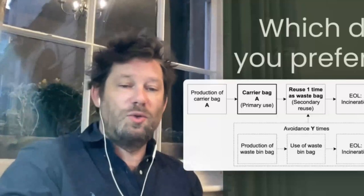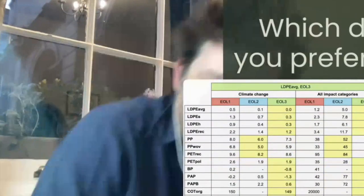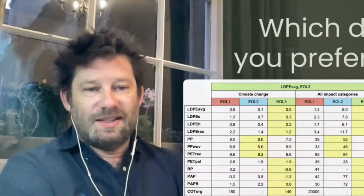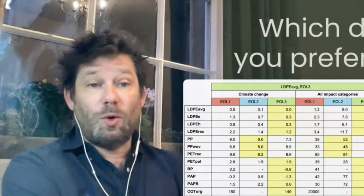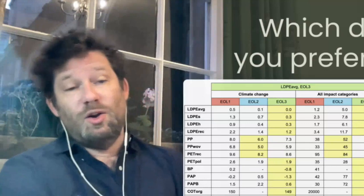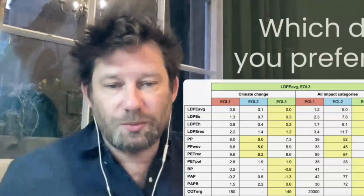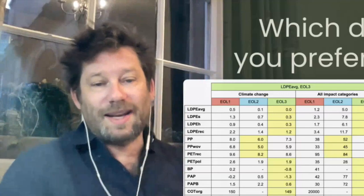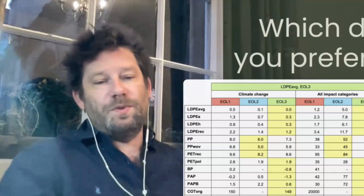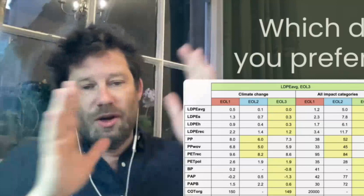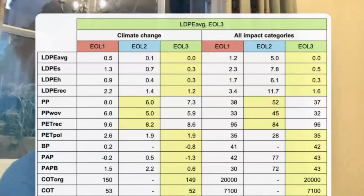So they went through three scenarios. Rest assured, I'm not going to walk you through all the numbers on that table, but basically they consider three scenarios. So that's end of life one, EOL two, EOL three, and they compared all the different types of bags and they looked at the global warming, climate change impact, and also the possibility of considering other categories.